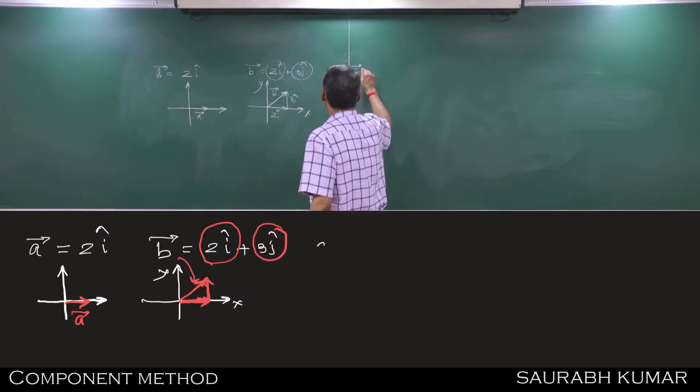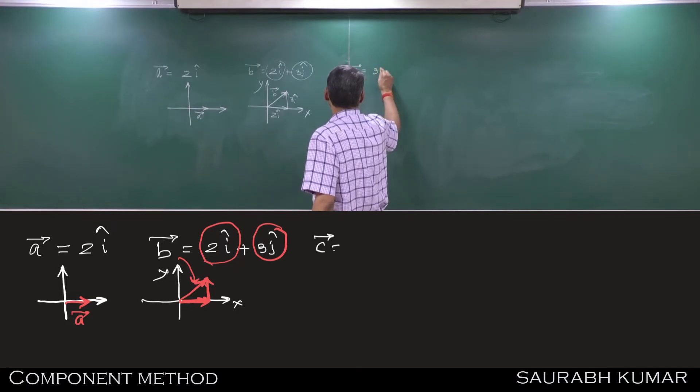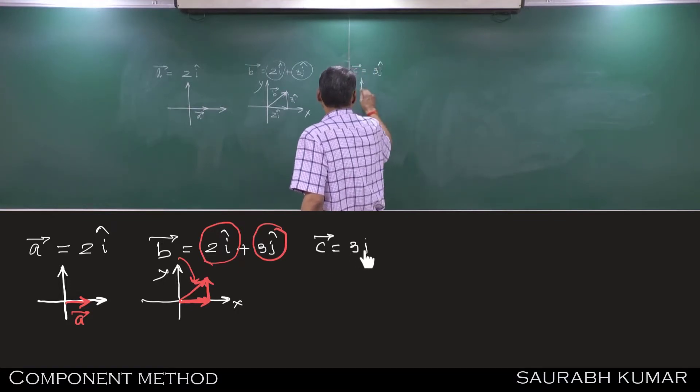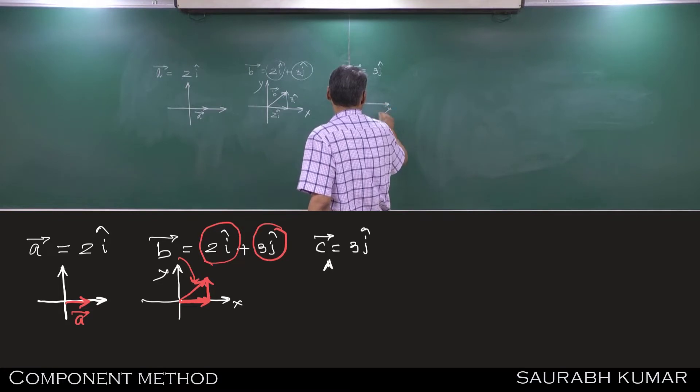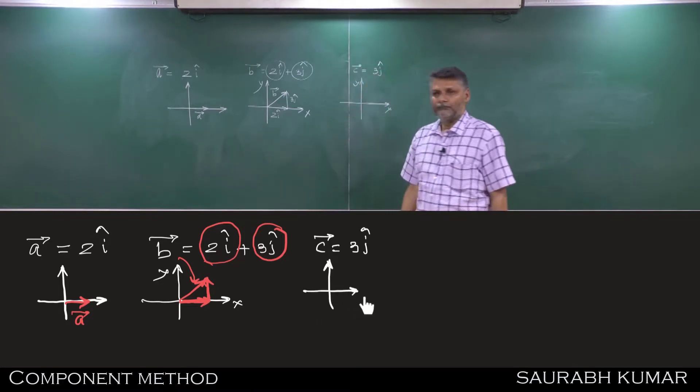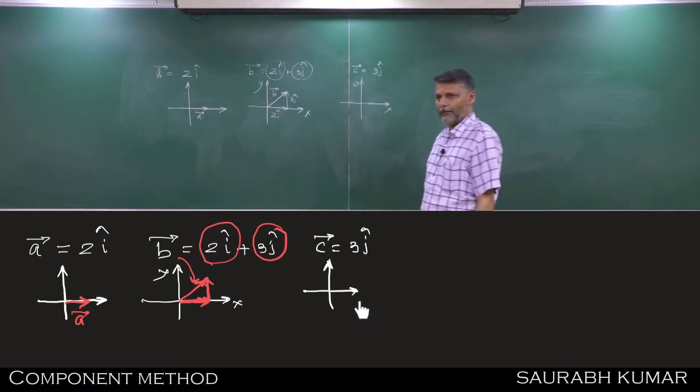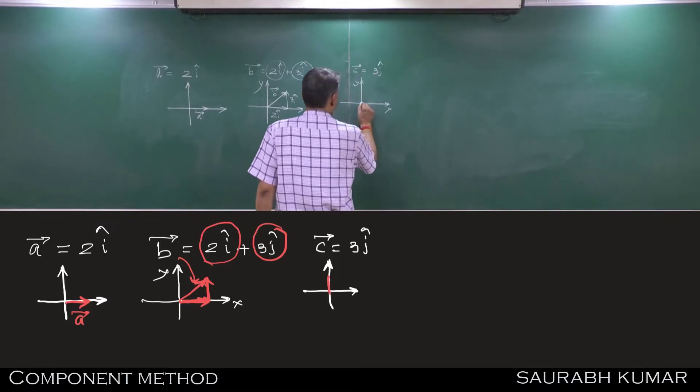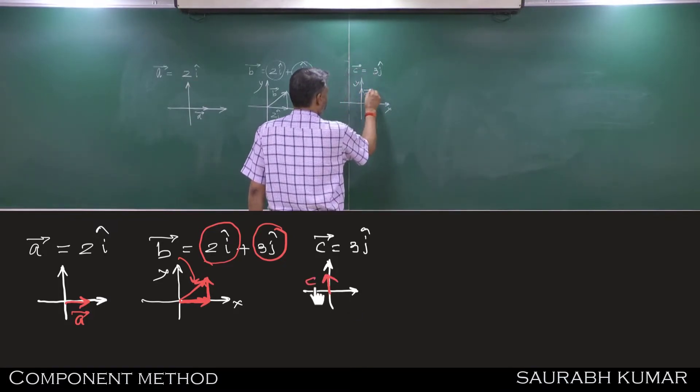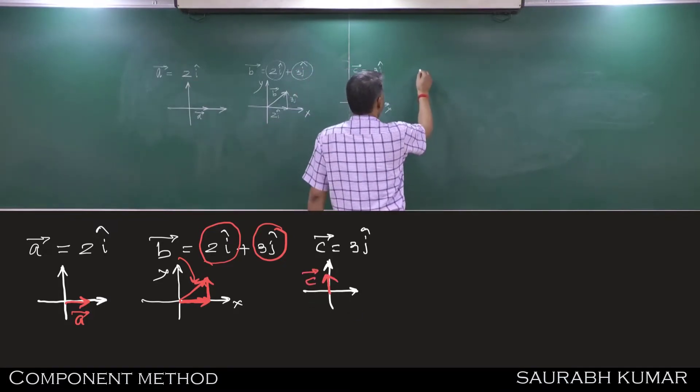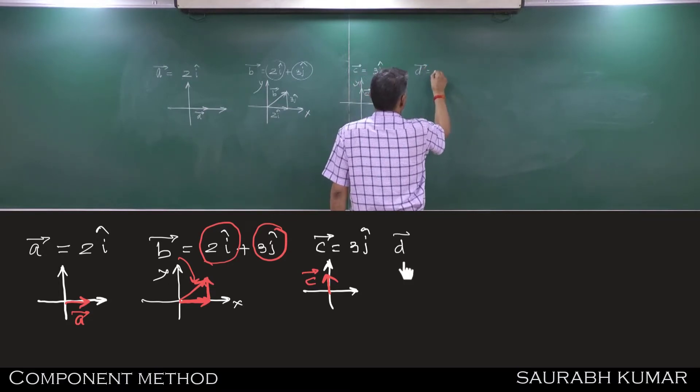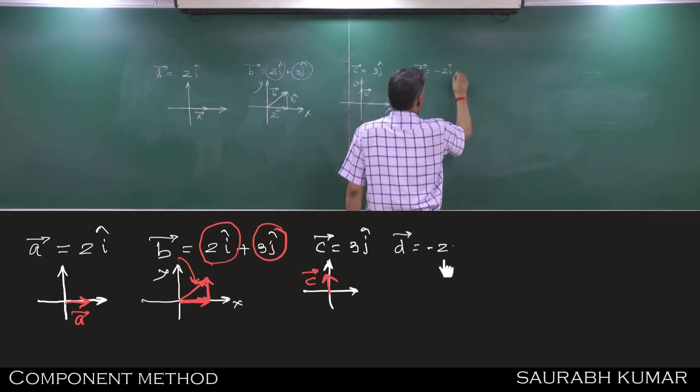2i cap is this vector, 3j cap. So this is vector B. So this is vector C, then vector D minus 2i cap plus 3j cap.